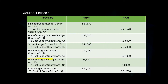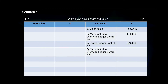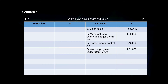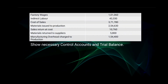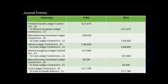The second effect for factory wages is given in Cost Ledger Control Account as 'by Manufacturing Overhead Ledger Control Account — 1 lakh 1,060.' Next, indirect labour — 43,330. The journal entry was Manufacturing Overhead Ledger Control Account debit, to Cost Ledger Control Account — 43,330. The first effect is given in Manufacturing Overhead Ledger Control Account — 43,330.